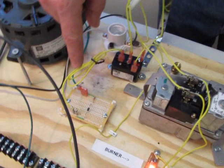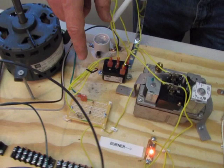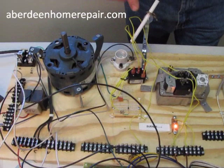And since we don't have any gas or flame here, we have installed a special circuit board that acts the same as a flame sensor. And you can buy this circuit board at AberdeenHomeRepair.com.